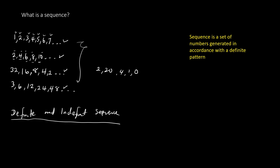In a definite sequence, we know the beginning of the sequence and the end. For example, look at the following sequence: 1, 2, 3, 4, 5 — with a full stop here. We can see this sequence is a definite sequence since we know that the first term is 1 and the last is 5.